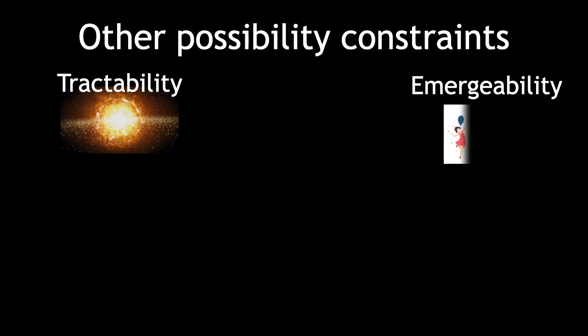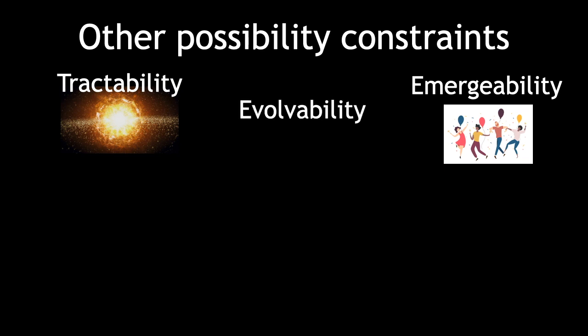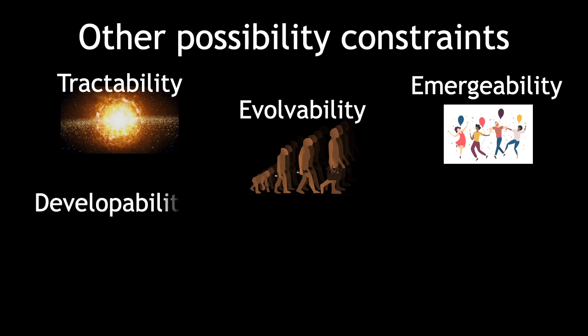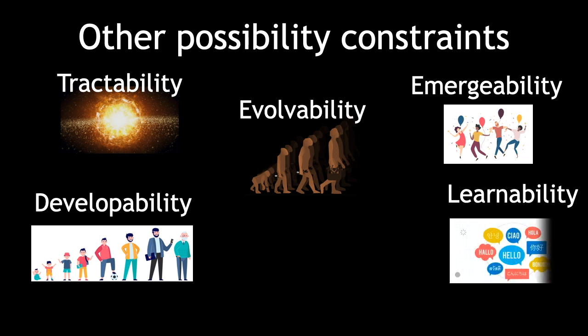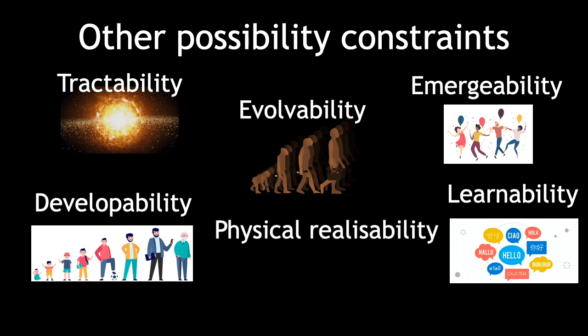Other constraints can vary from capacity to capacity. For instance, for the capacity of groups of people to form subgroups with certain properties, these subgroup formations must be emergeable from local social interactions. Also, assuming that we as a species evolved particular cognitive architectures, any such hypothesized architecture must, in principle, be evolvable. Similarly, cognitive capacities that adults have must be developable, and skills and complex competencies we have, including our capacity for language, must be learnable. And last but not least, cognitive brain capacities that we postulate must be physically realizable in neuronal and other brain processes.